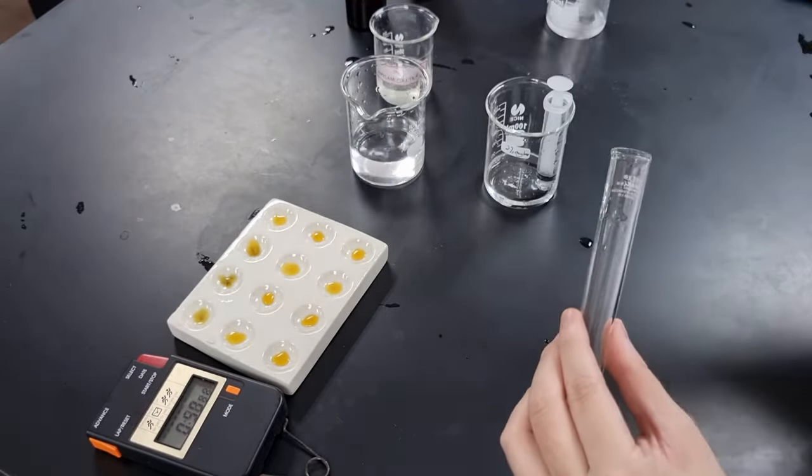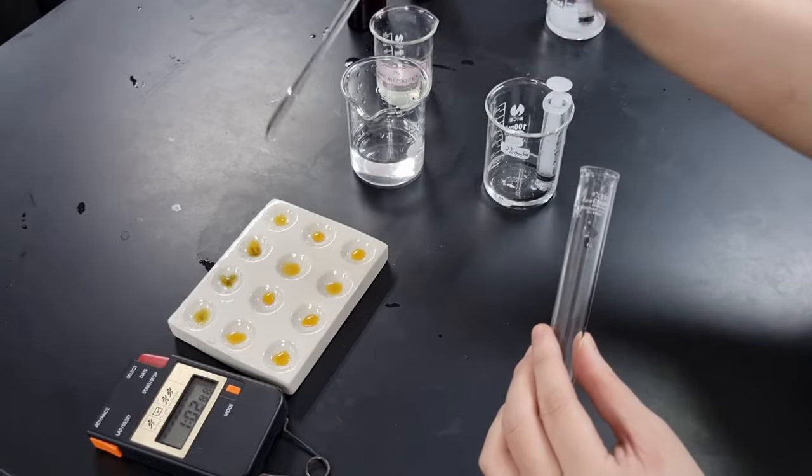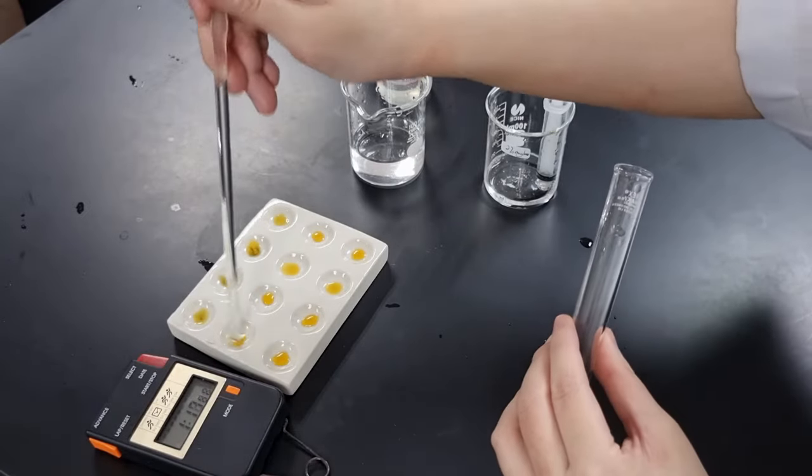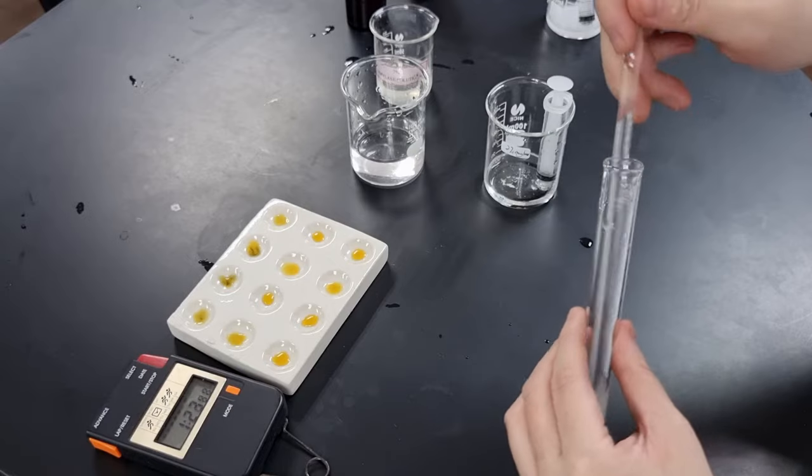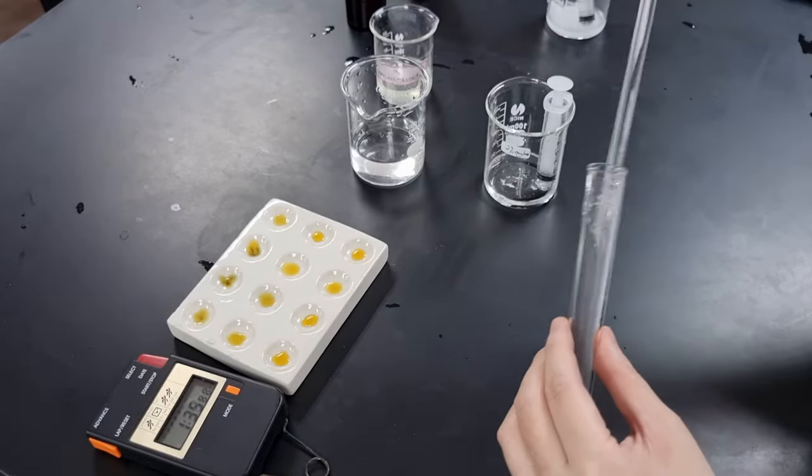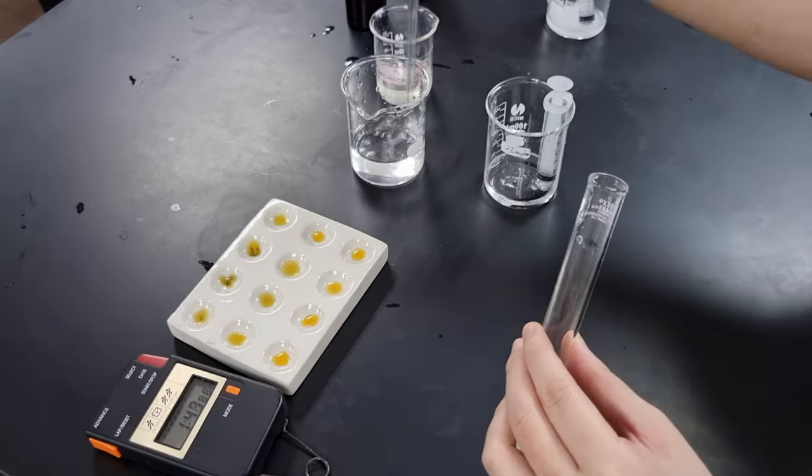This video is obviously sped up. It's always stir, drop it into one well, and then a little dip into the water just to rinse off the excess iodine. You repeat this until the solution in the well remains yellow.